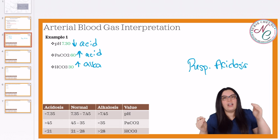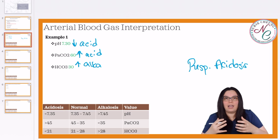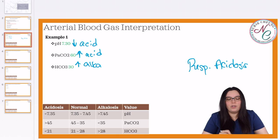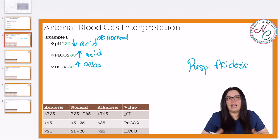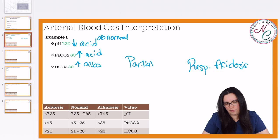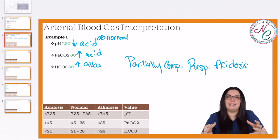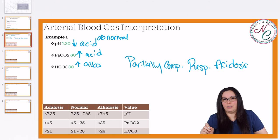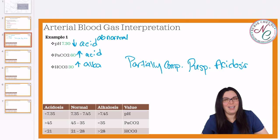We've got two competing systems trying to fix each other, so we know that there's some kind of compensation taking place. We have to look at our pH — our pH is still abnormal within the spectrum of everything that's occurring. So if we have an abnormal pH and two competing systems trying to fix each other, we know that this is only partially compensated. So we have a partially compensated respiratory acidosis. If our pH was within normal — between 7.35 to 7.45 — and still met the requirements of two competing systems, then we would have a fully compensated respiratory acidosis. But because our pH is still abnormal, we have a partially compensated respiratory acidosis.